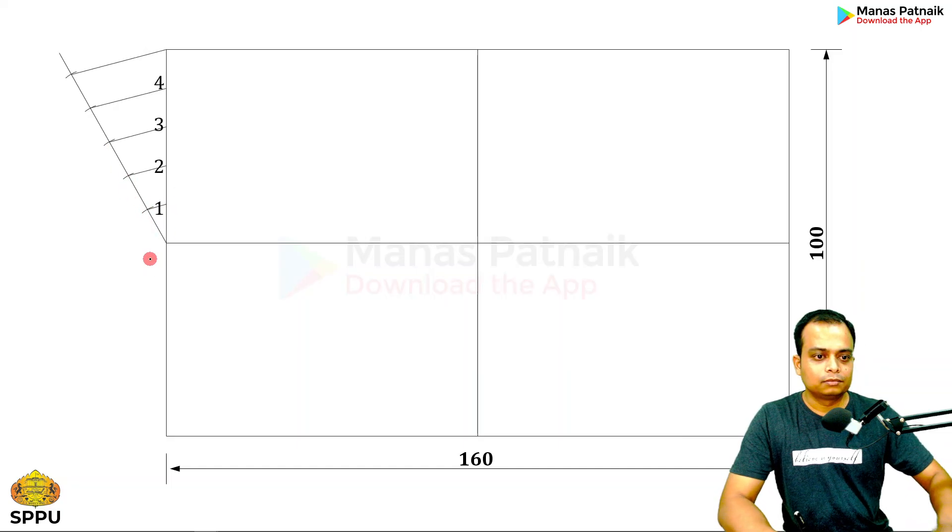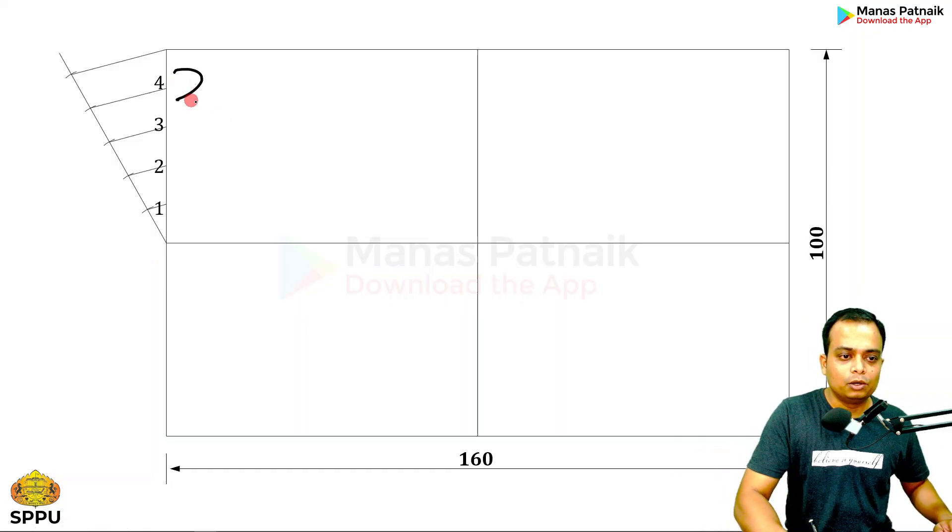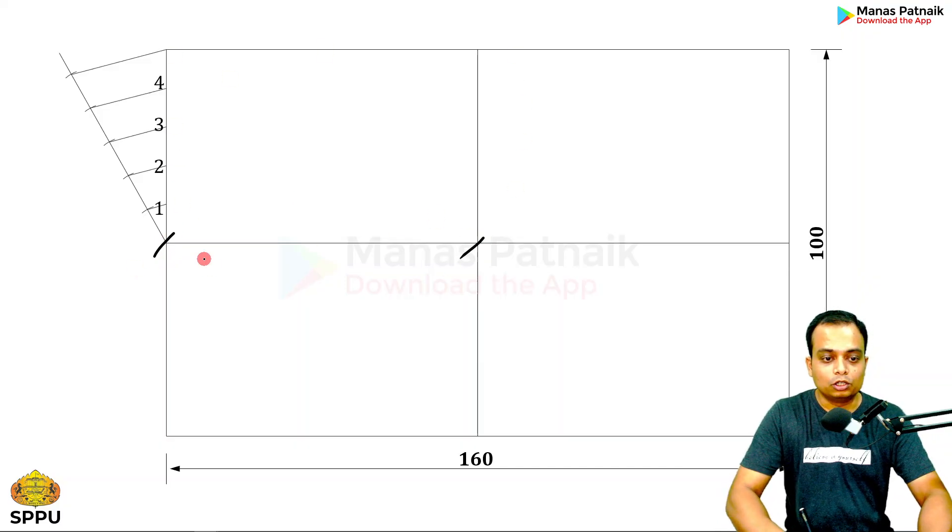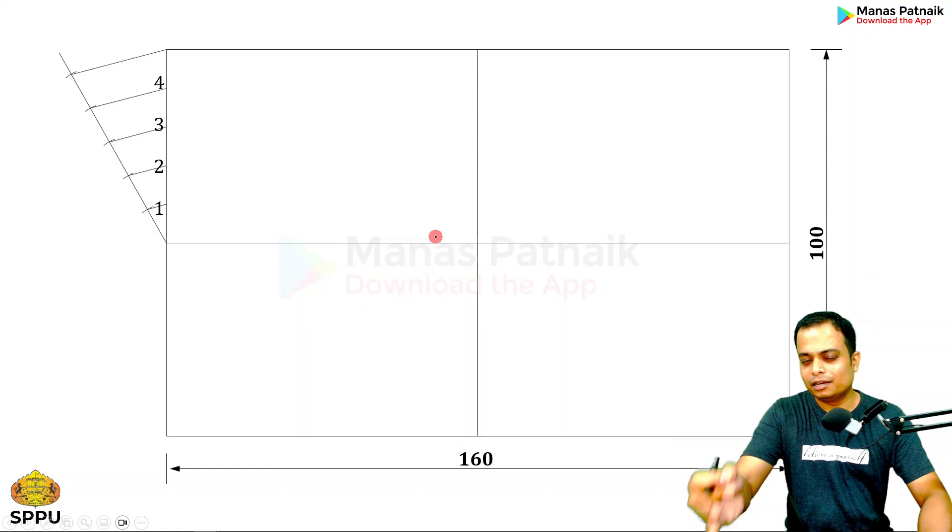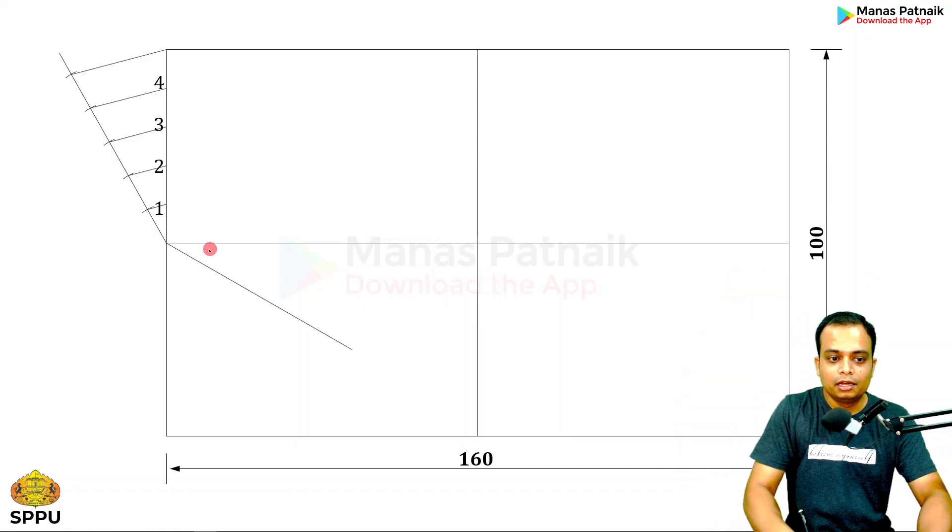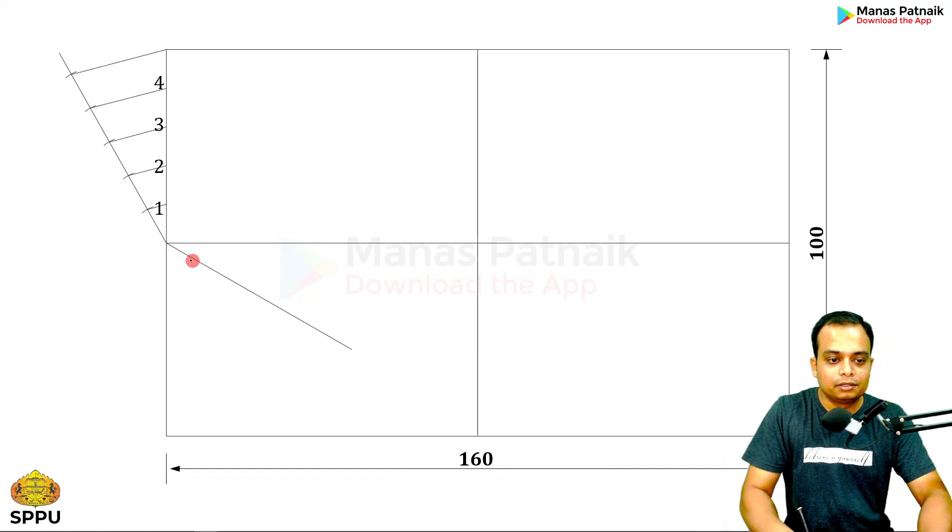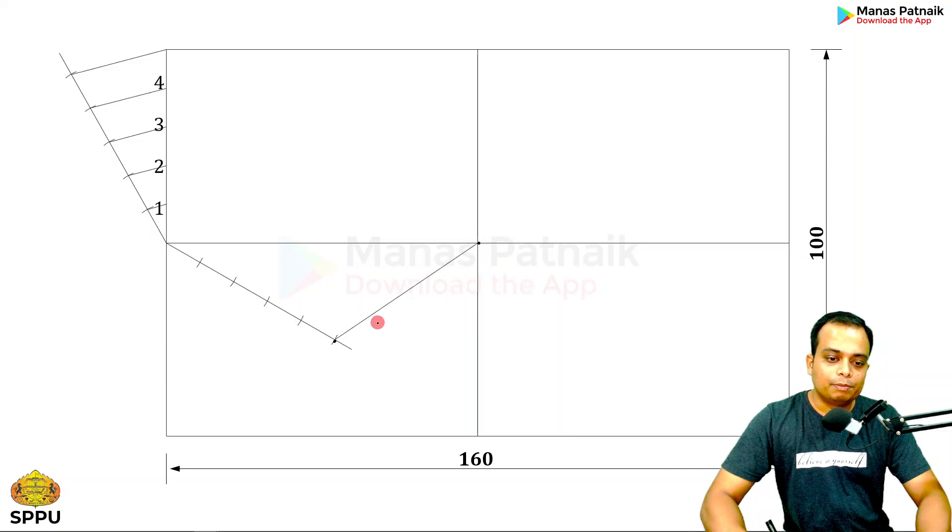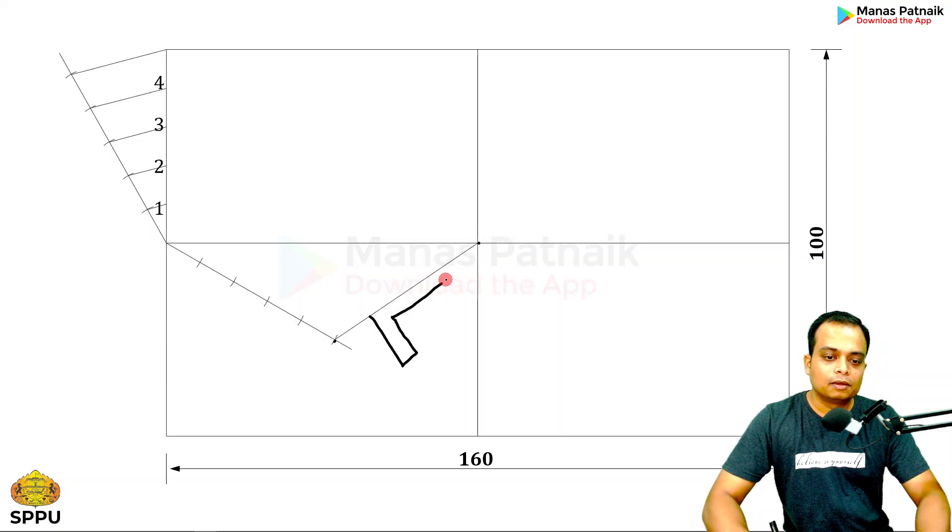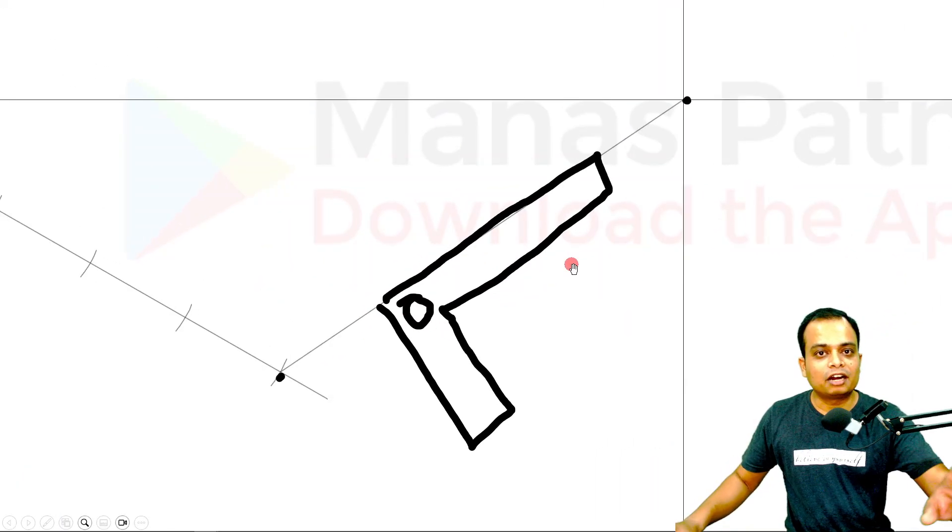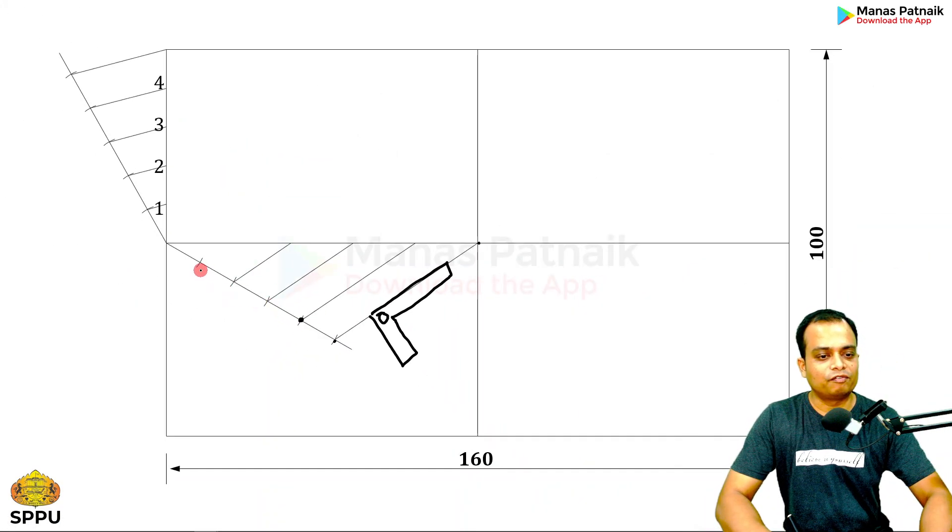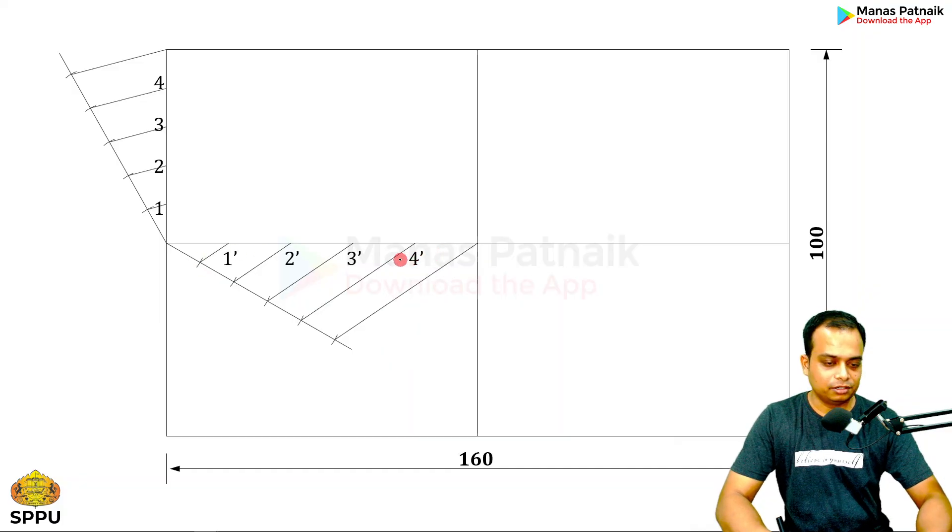In the same fashion, divide this portion into five equal parts. Draw a line at any angle, mark points at 10 millimeters distance: one, two, three, four, five. Connect the fifth point with this point, keep your drafter like this, tighten the screw, then bring it to the fourth point and draw a line, third point, second point, first point, and done.